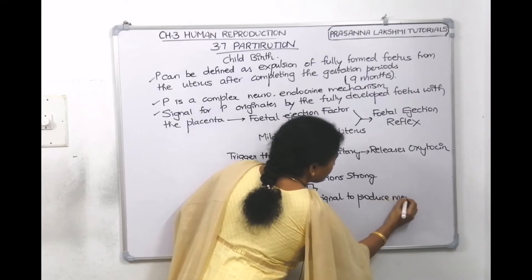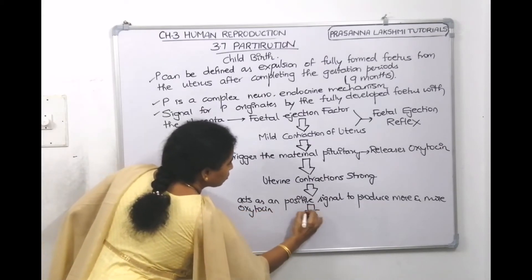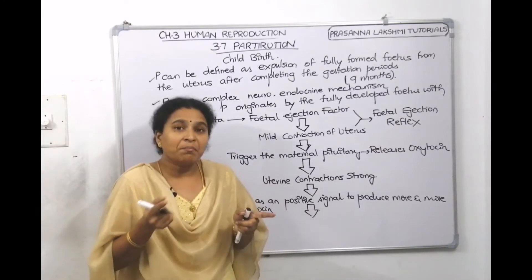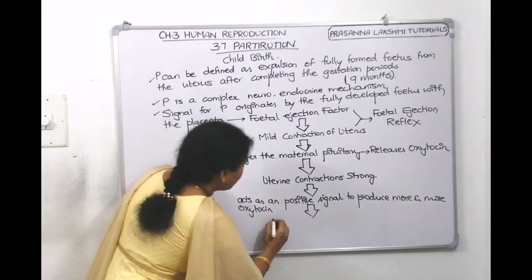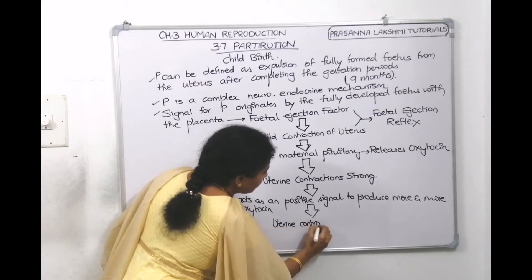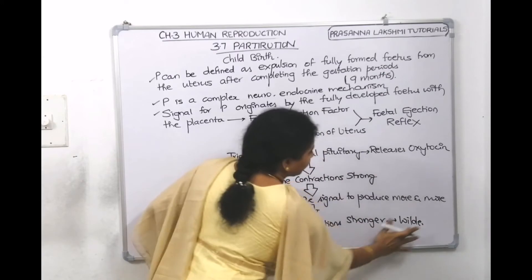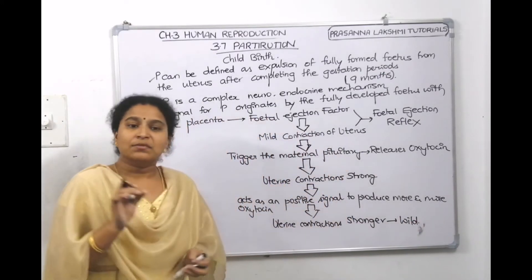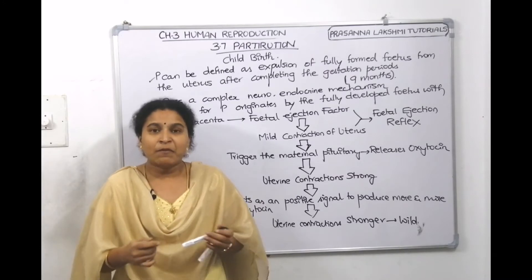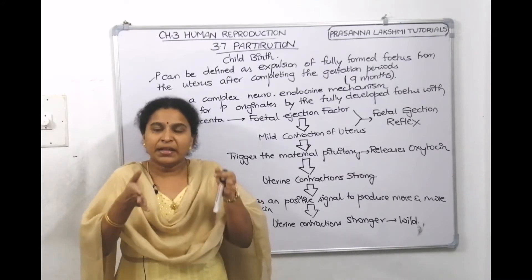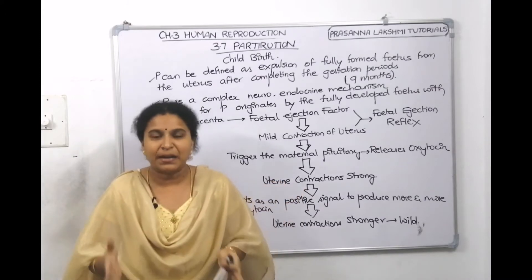As more and more oxytocin is produced, it acts on the maternal uterus, making contractions stronger and wilder. When the contractions go wild, the cervix starts dilating. As the cervix dilates, the baby's head comes into position, labor pain increases, and with that pain and pressure the baby is expelled out.